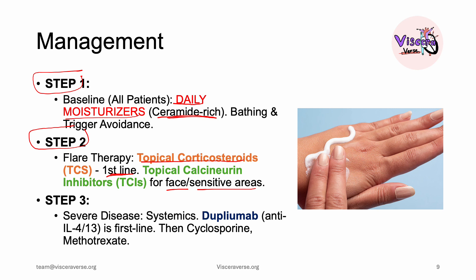We step up to step three if the disease is very severe. We go with systemic drugs like dupilumab, which is an anti-interleukin-4 and anti-interleukin-13 biologic — the main interleukins involved in the pathogenesis of atopic dermatitis. If this does not work, we can also use cyclosporine and methotrexate.